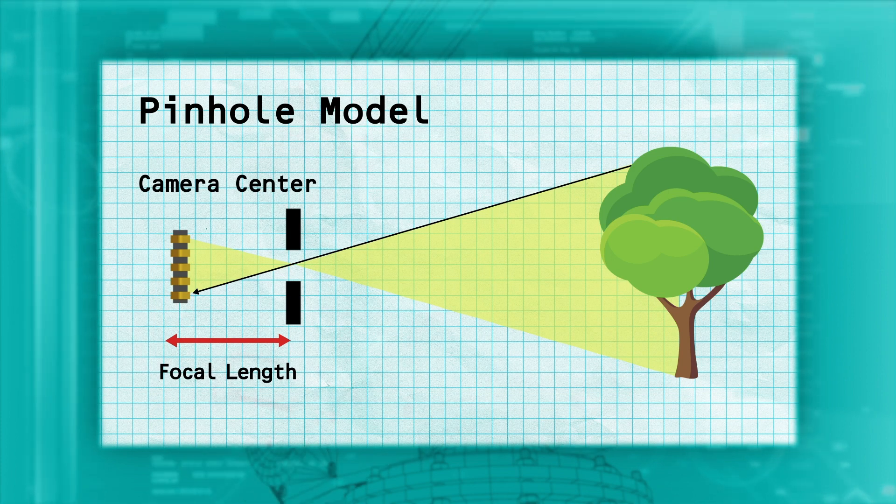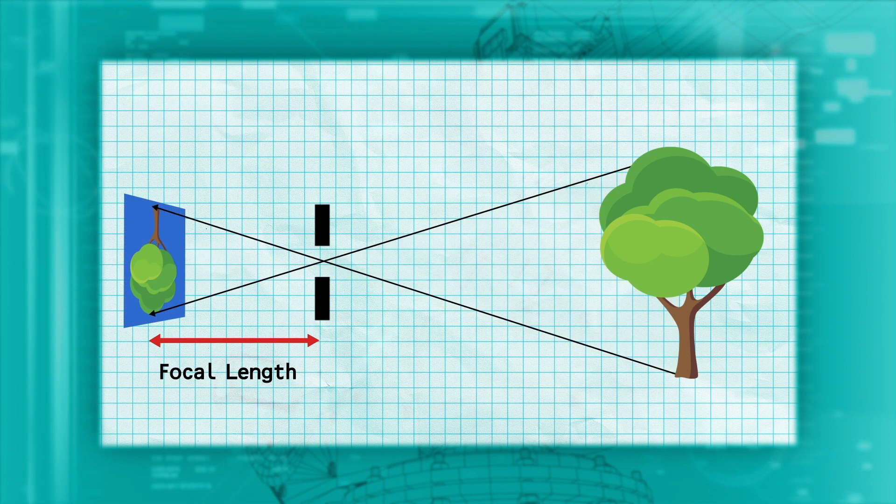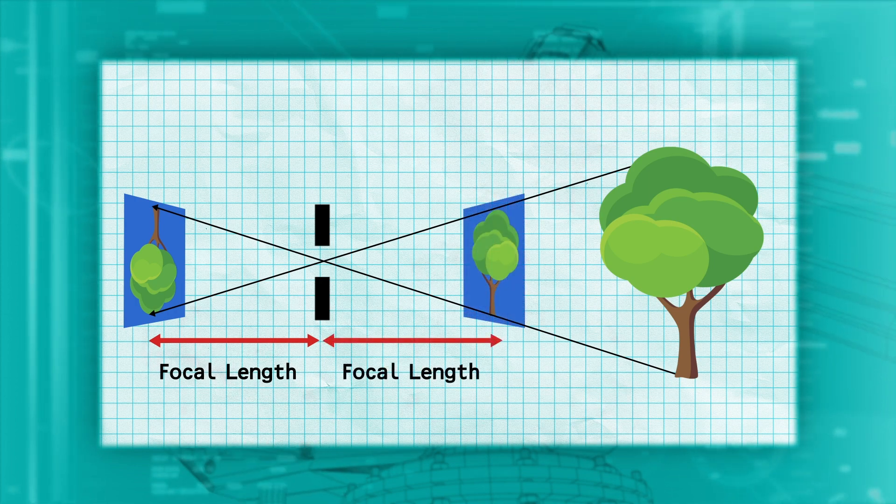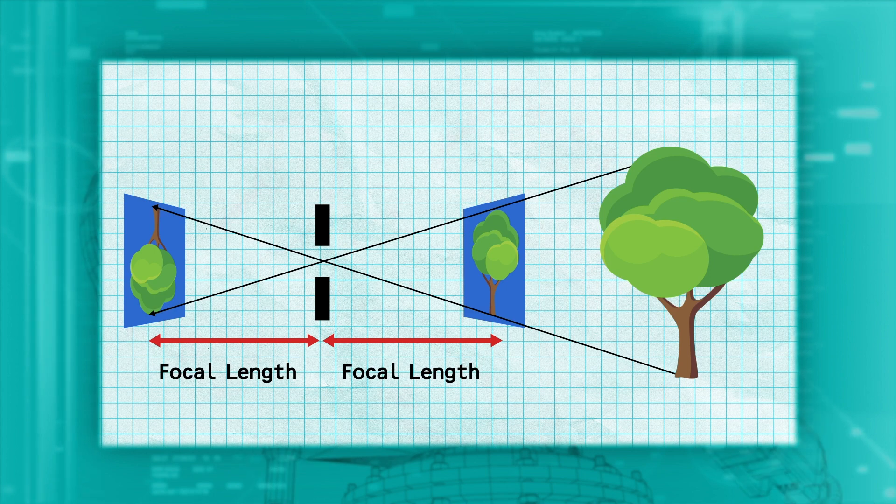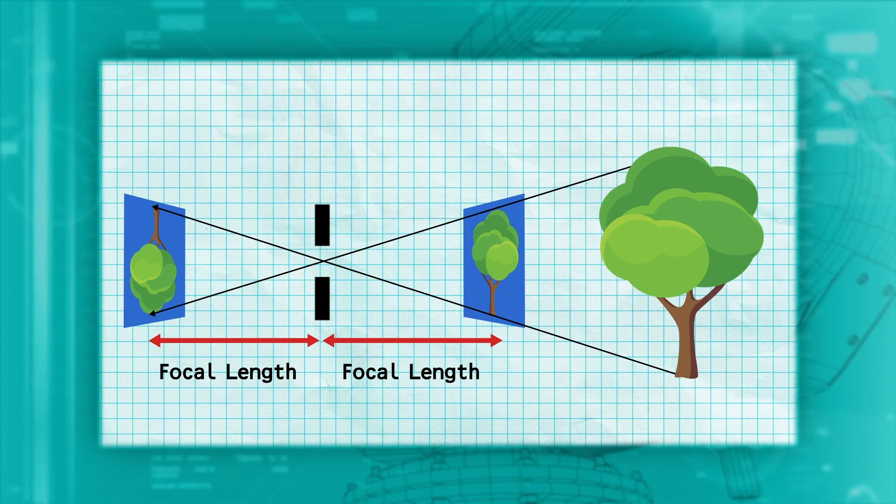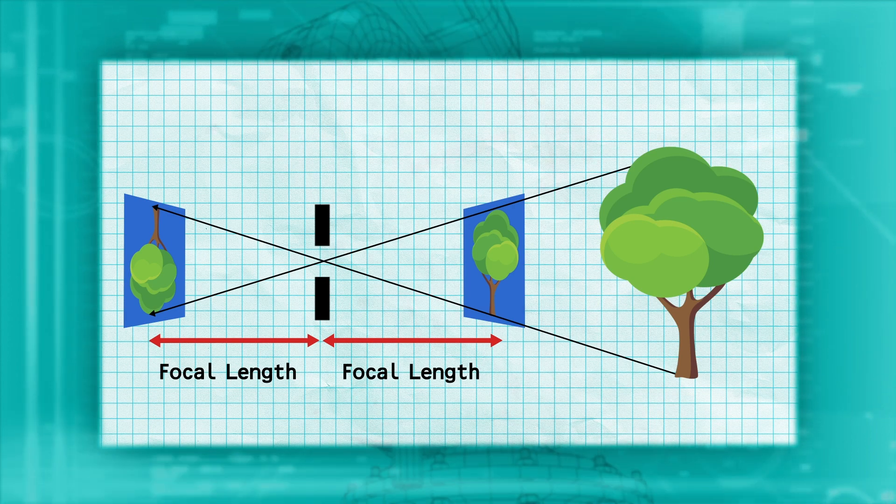Dealing with an upside-down image isn't very convenient. So what if we were to imagine an image in front of the pinhole at the distance equal to the focal length, instead of behind the hole? Since the rays from the tree would now pass through the image plane before they went through the pinhole, we would get a right-side-up image.